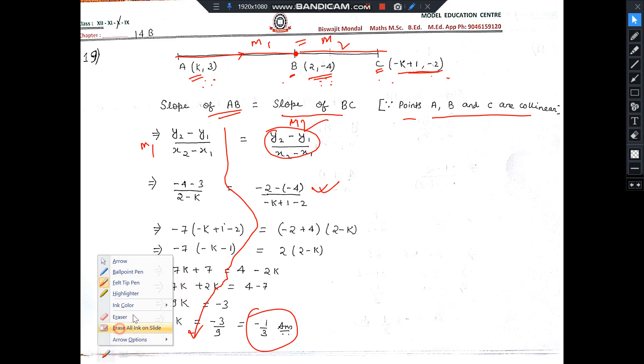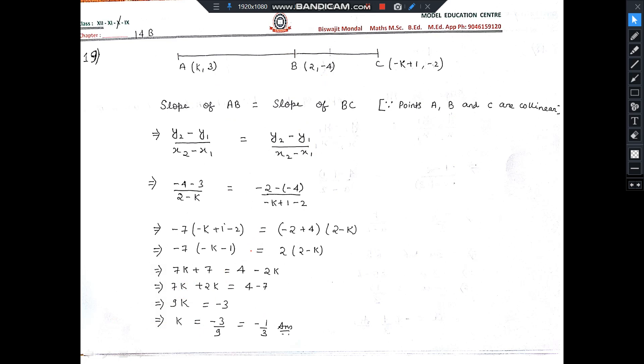The sum is very easy. Here, the formula required is M1 equal to M2. That is slope of AB, M1, equals slope of BC, M2. This is the formula of M1 and this is the formula of M2, the slope.